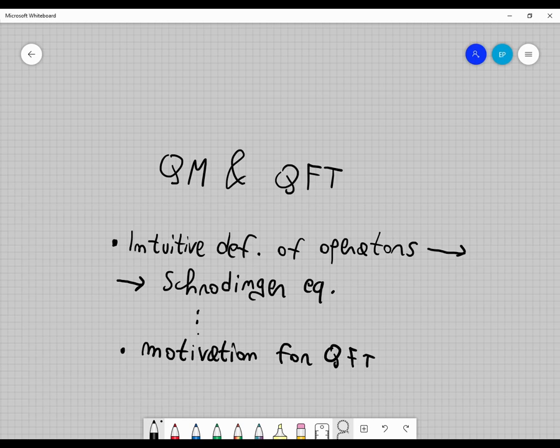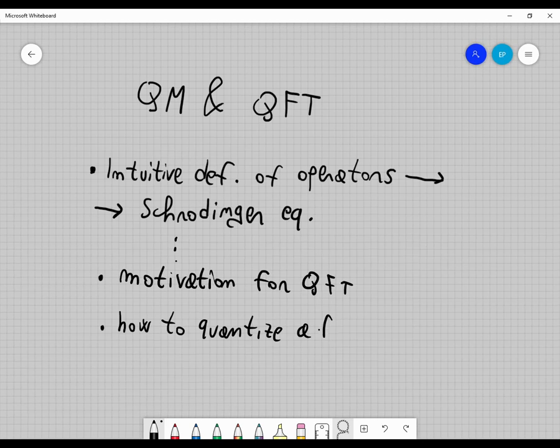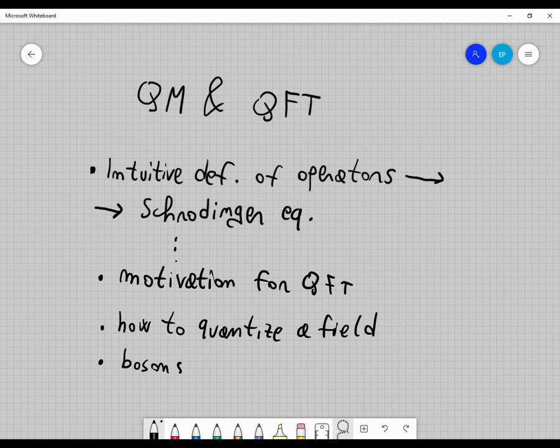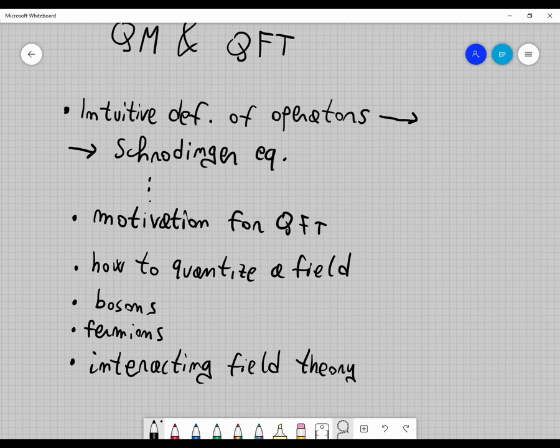In particular, some of them, let me list them: how to quantize a field, but also the concept of bosons, fermions also in the second part of the course, and also interactions of fields, which are very important for many quantum processes, for example, collisions of particles. It is a must to study interacting field theory, also angular momenta, intrinsic angular momenta, like the concept of spin, and many more.